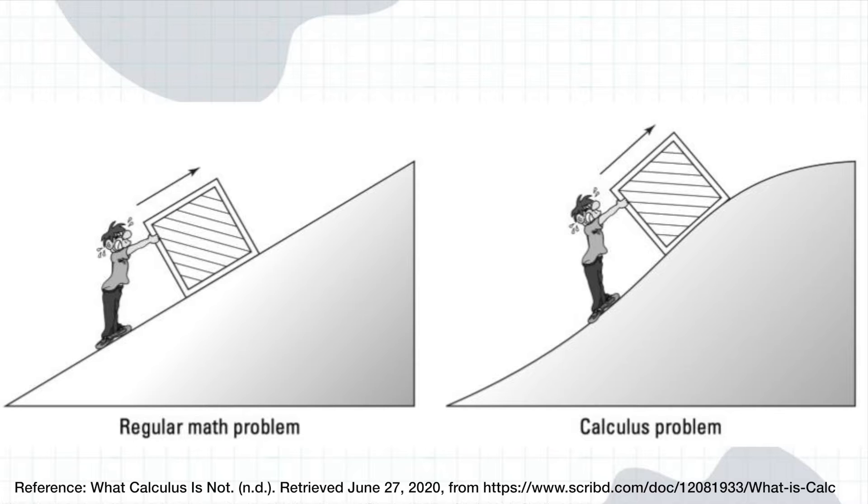In the illustration above, you can see the difference between a regular math problem and a calculus problem. For the figure on the left, the man pushes the box with an unchanging force and it goes up an unchanging speed. On the other hand, the figure on the right shows that things are constantly changing. This pertains to the steepness of the incline and the force exerted by the man.